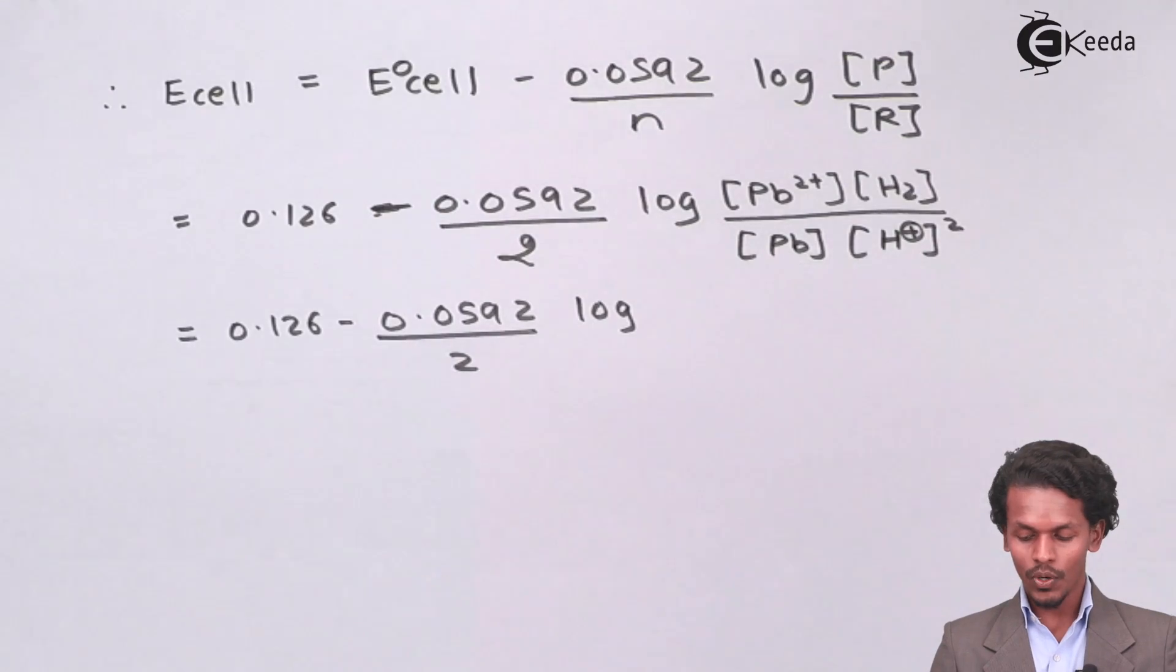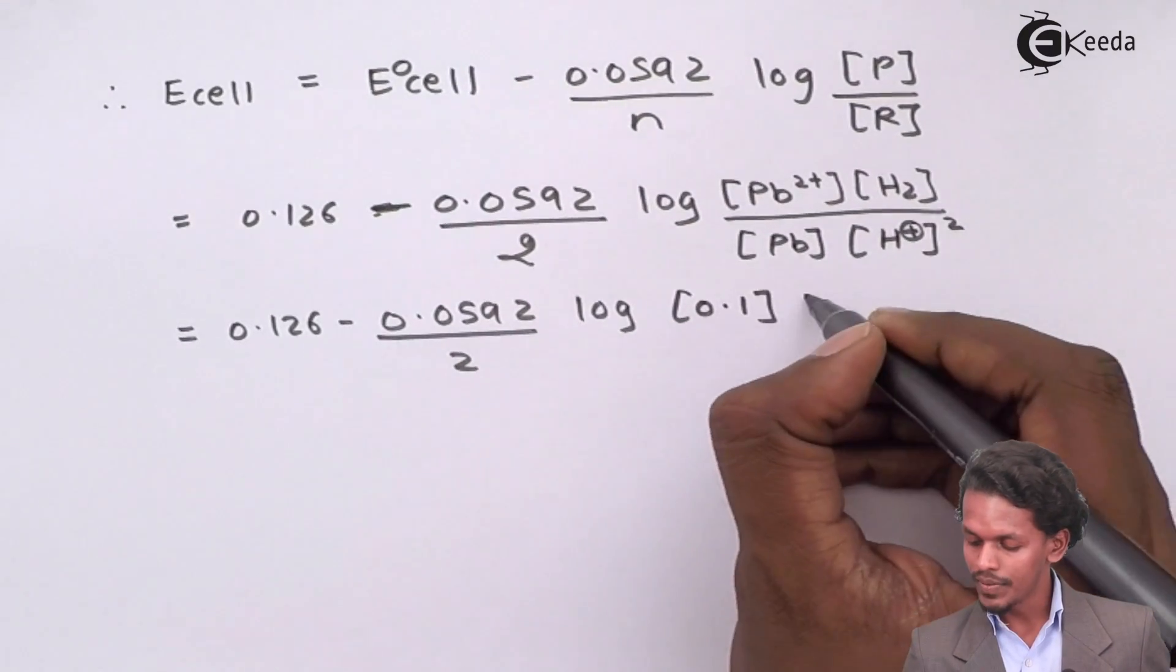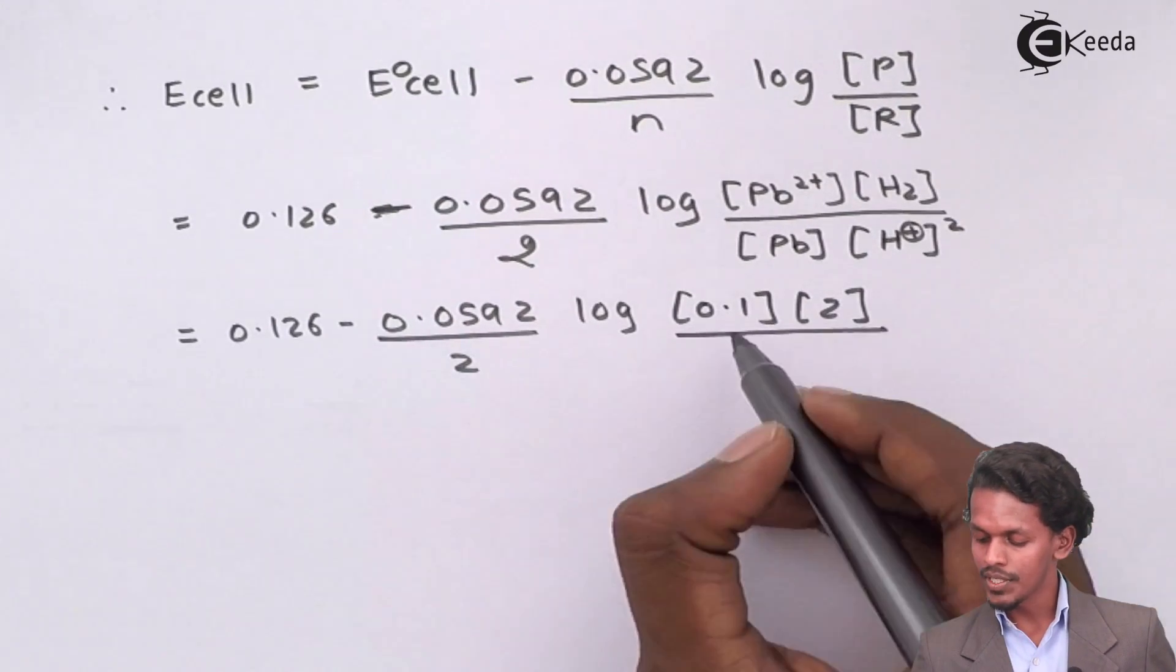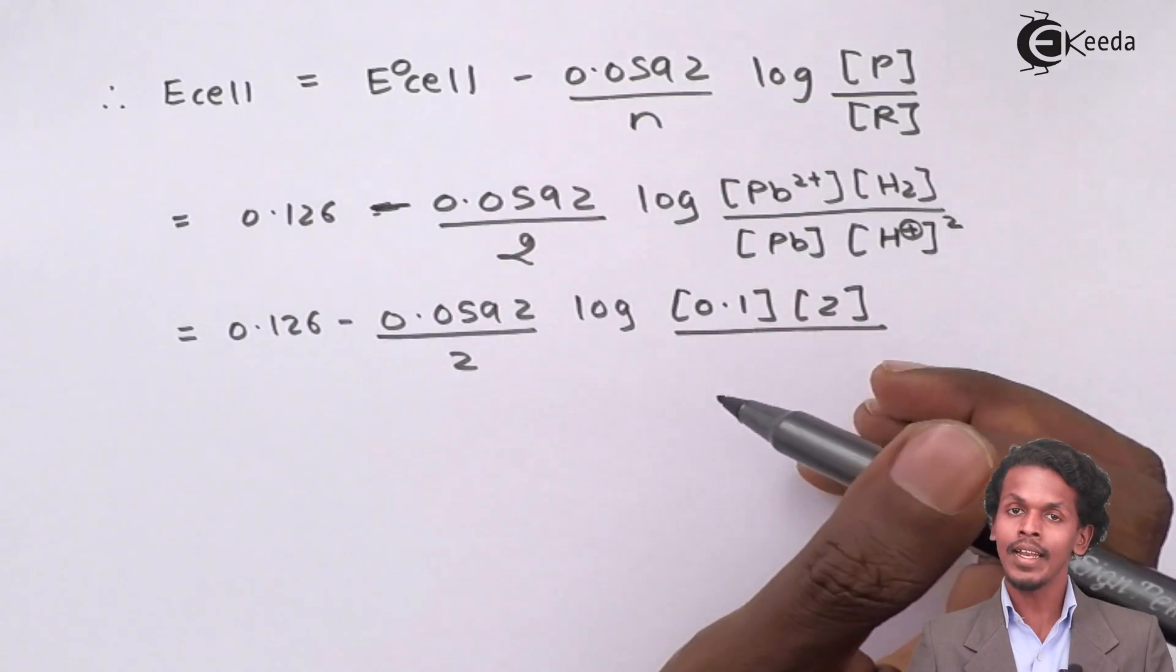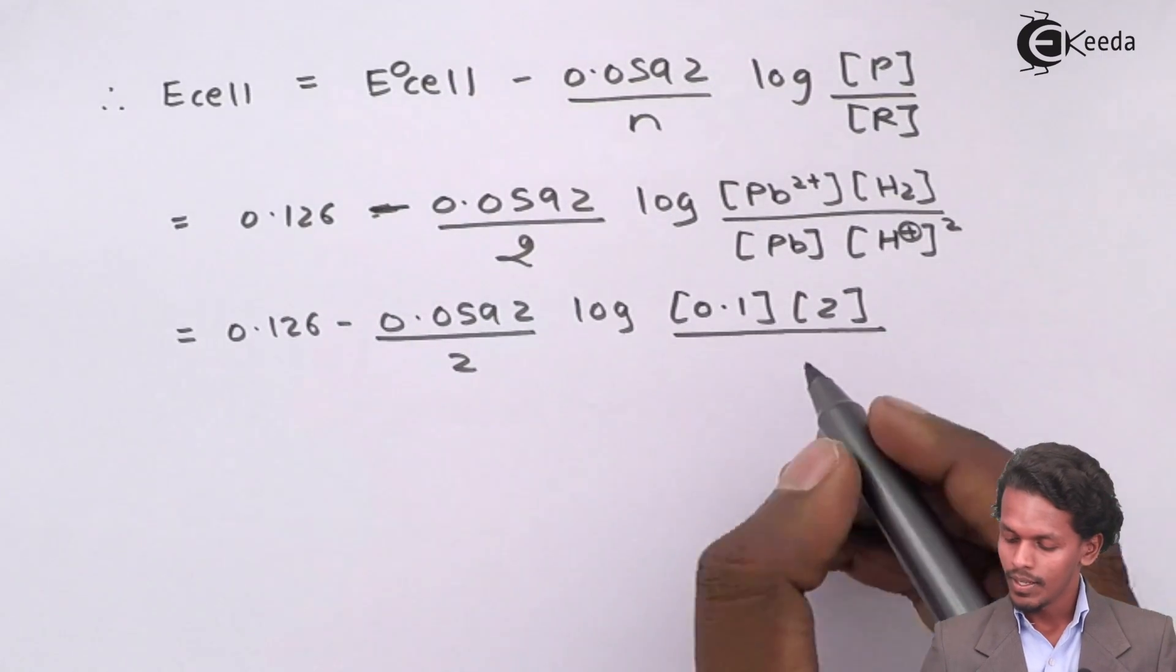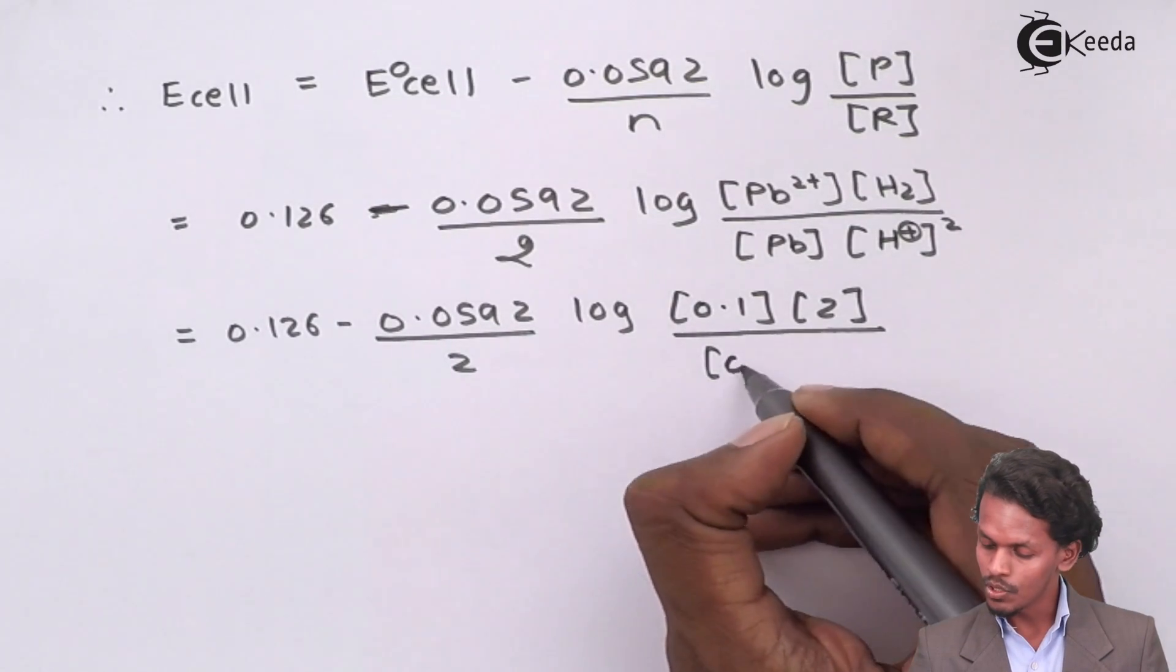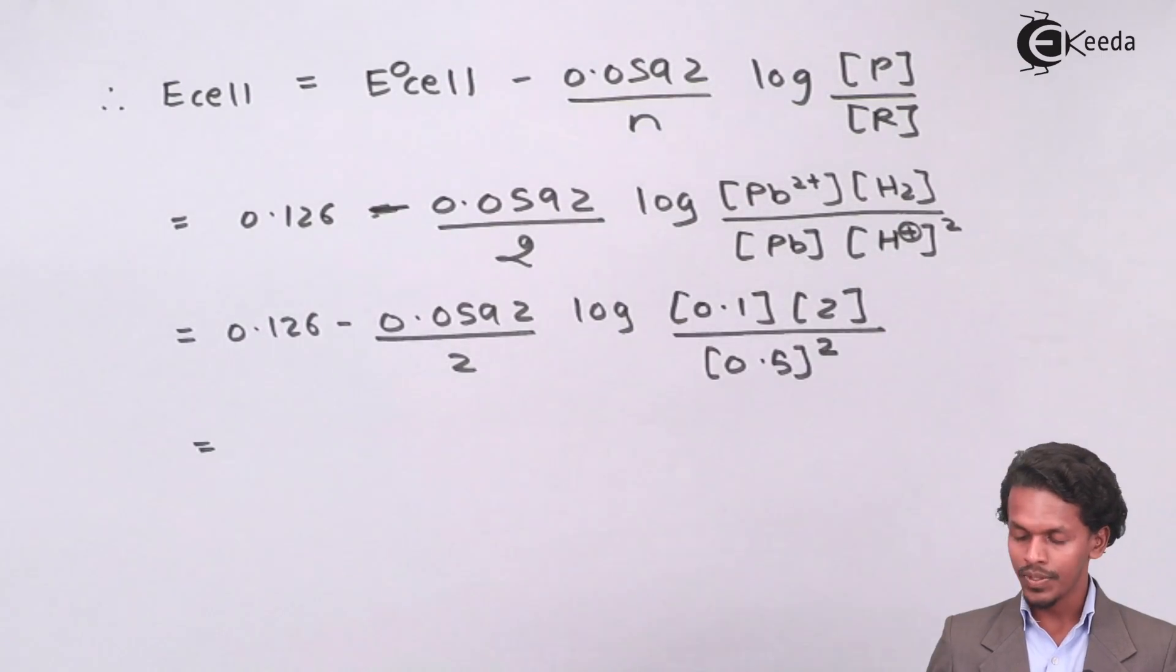Now we can calculate it very easily. 0.126 minus 0.0592 divided by 2, log of the concentration of Pb2 plus, which was 0.1, times the pressure of hydrogen, which was 2, divided by the concentration of Pb, which is 1 because Pb is present in metallic form, and the concentration of H plus was 0.5 raised to 2.